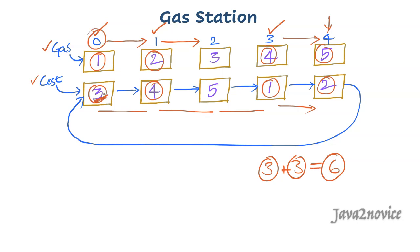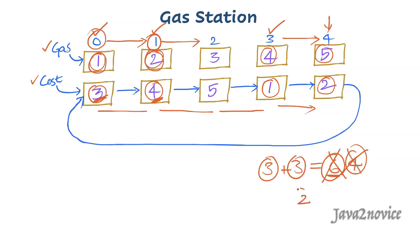Now we are at index 0 with 6 units balance. We need 3 units to move from index 0 to index 1. We have 1 unit available plus 6 units balance, so we can easily move. After reaching index 1 we are left with 4 units balance. We need 4 units to move from index 1 to index 2. We have 2 units available and 4 units balance, so we can move. After this the balance is 2 units.